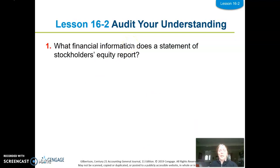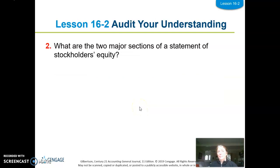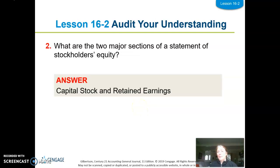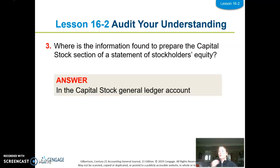Let's go through the audit of your understanding. What financial information does a statement of equity report? The changes in the ownership for a fiscal period. What are the two major sections? Capital stock and retained earnings. And where is the information found to prepare that section? In the capital stock general ledger account. That is Section 16-2, preparing a statement of stockholders' equity for a corporation.